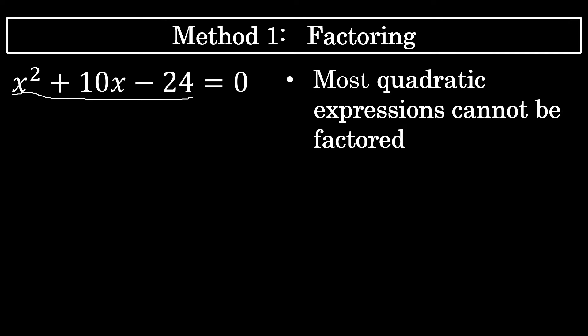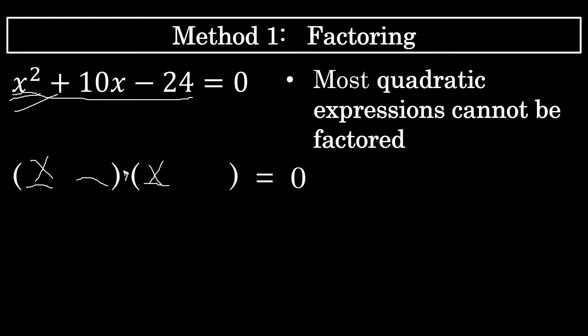The way that I'm going to factor this quadratic is to begin by making two sets of parentheses that will represent two binomials multiplied together. When I multiply these two binomials together, the result should be x squared plus 10x minus 24. The first terms in each binomial are x and x, since those are the only two factors that multiply to x squared. The remaining terms will be two numbers that have a product of negative 24 and a sum of positive 10.